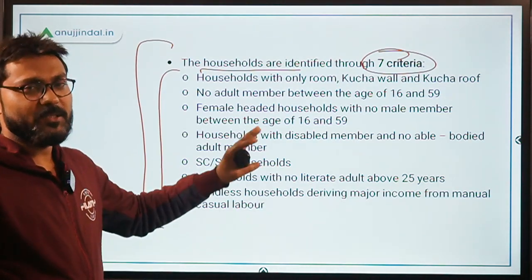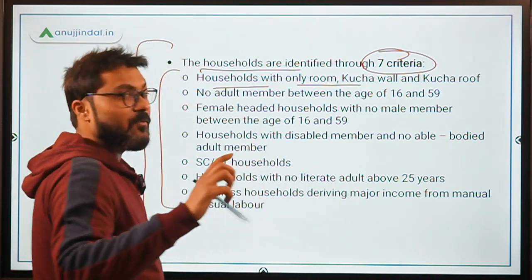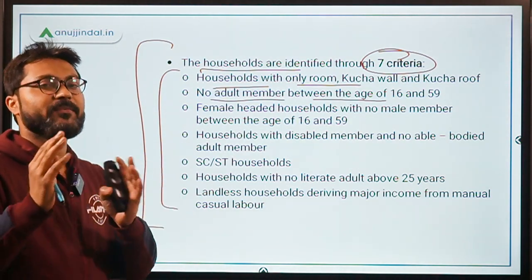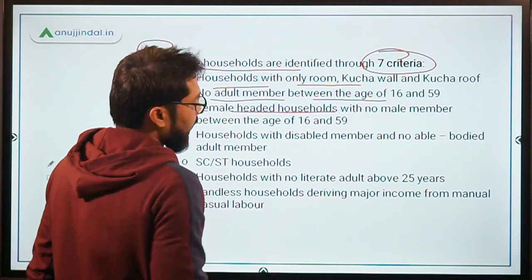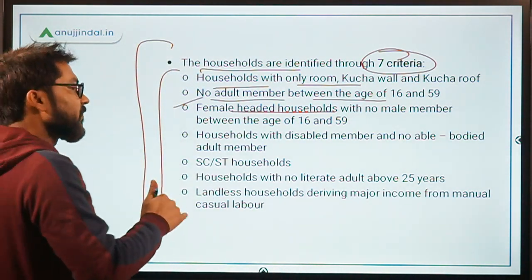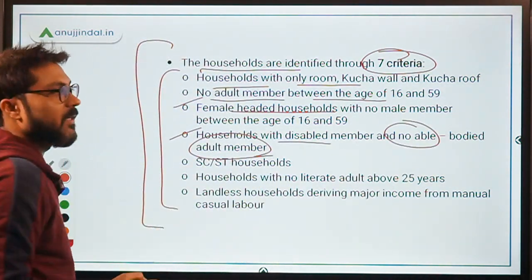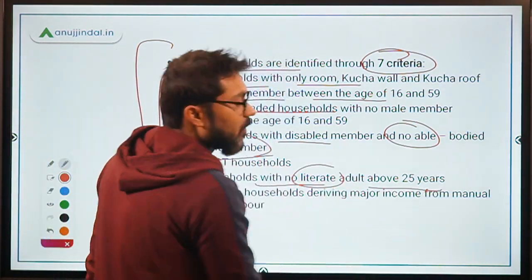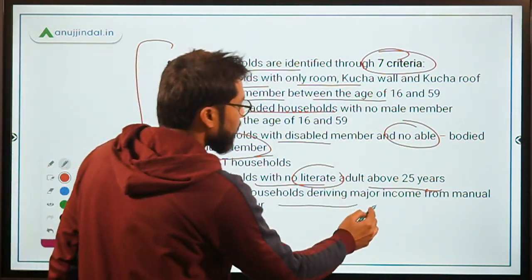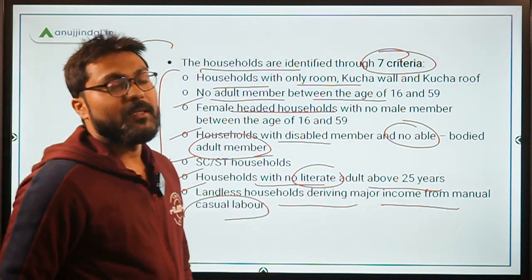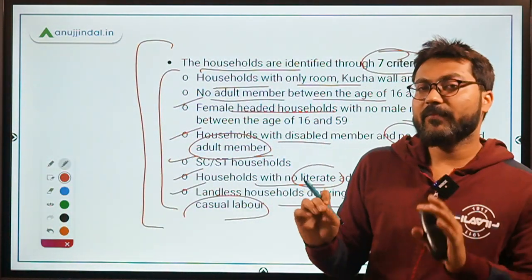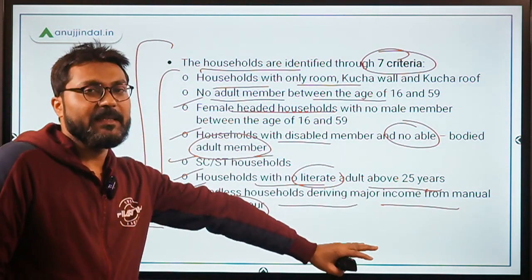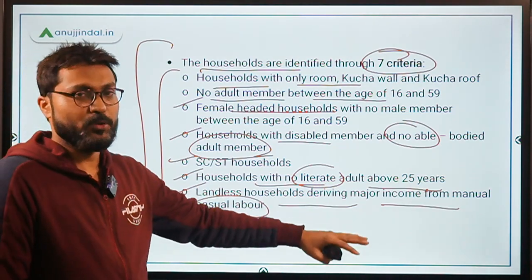These seven criteria are not worth memorizing for the exam; they are just for basic understanding. The criteria include: any household with only one room with kaccha wall and kaccha roof; no adult member between the age of 16 and 59; female-headed household with no adult male member between 16 and 59; household with a disabled member and no able-bodied adult; SC/ST households; households with no literate adult above 25 years; and landless households deriving major income from manual labour.